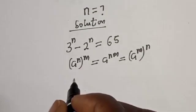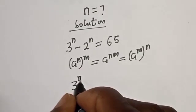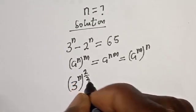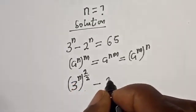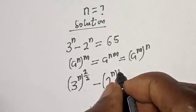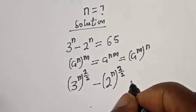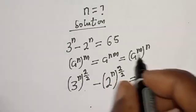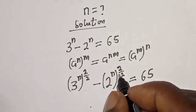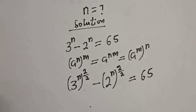Now, for this equation, let's add a trick here. We have 3 raised to power n times (2 over 2) minus 2 raised to power n, all to the power of (2 over 2), then equal to 65. This does not change the exponent because 2 divided by 2 gives you 1.